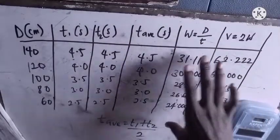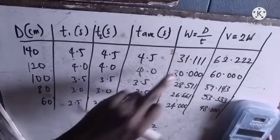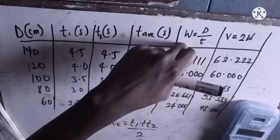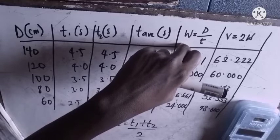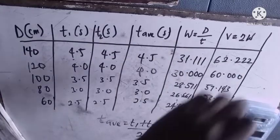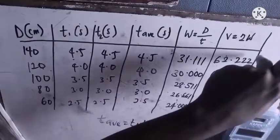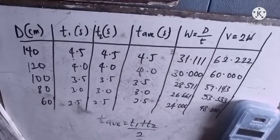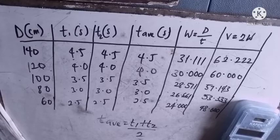Your v equals 2w. This w is what they ask us to use: two times 31.111 equals 62.222. It's the formula they give you that you will use to find what you have here.